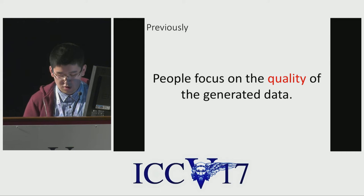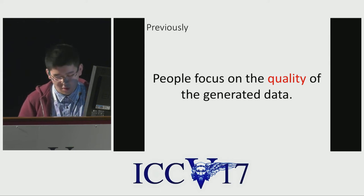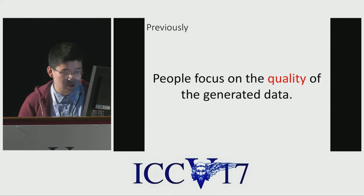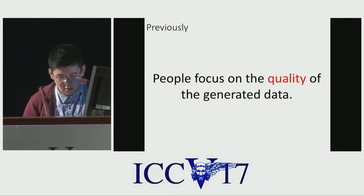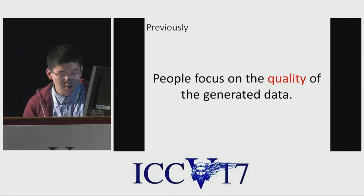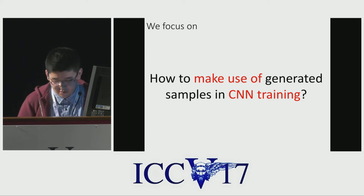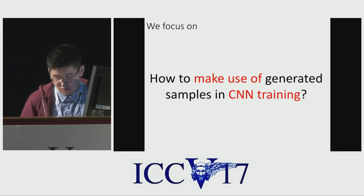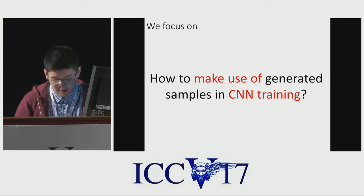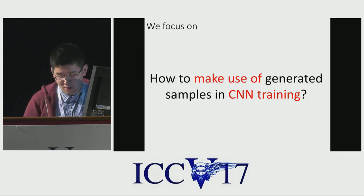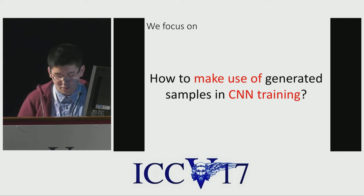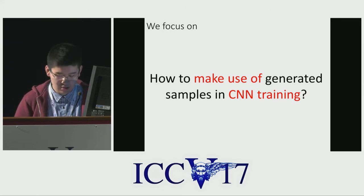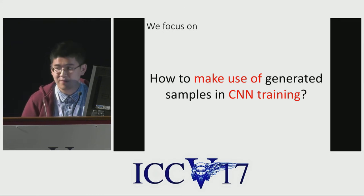Current research in Generative Adversarial Networks typically considers the quality of the generated data. But a scientific problem remains unknown: how to make use of the generated data? Can we move the generated samples out of the box and use them in currently available learning frameworks? We call this process in vitro.